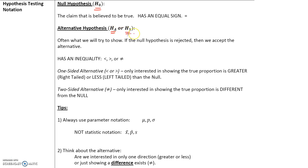Some notation: the null hypothesis is denoted by H sub 0; the alternative hypothesis is written as either H sub a or H sub 1. The null hypothesis always has an equal sign — this is the status quo or what is believed to be true. The alternative hypothesis is what we try to show and always challenges the null. If the null hypothesis is rejected, we accept the alternate hypothesis. The alternate hypothesis always has an inequality: less than, greater than, or not equal to.